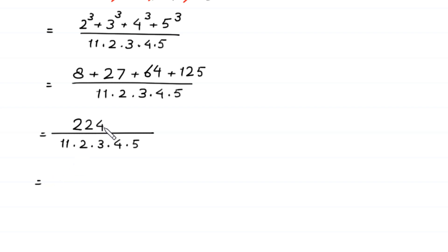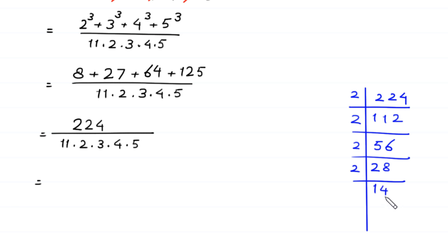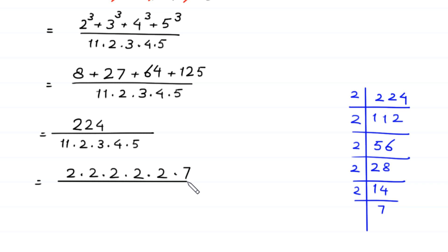Next, 224 can be factorized by dividing repeatedly by 2: 224 = 2 times 112 = 2 times 2 times 56 = 2 times 2 times 2 times 28 = 2 times 2 times 2 times 2 times 14 = 2 times 2 times 2 times 2 times 2 times 7. So 224 = 2 to the power 5 times 7.